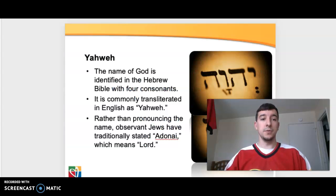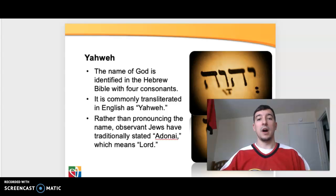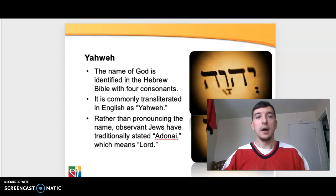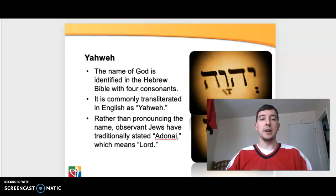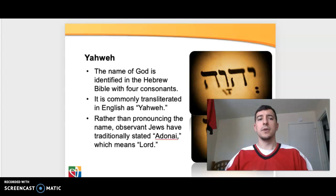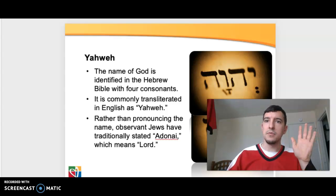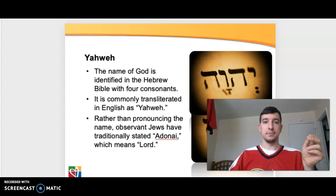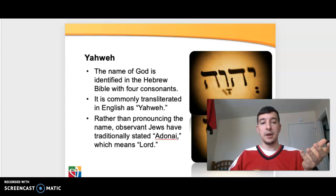For the Jews, Yahweh is the name of God, identified in Hebrew by the four consonants Y-H-W-H, depicted right above me. Commonly translated in English as Yahweh. Rather than pronouncing the name, observant Jews have traditionally stated Adonai, which means Lord. So when you hear the Hebrew word in Jewish prayers — Adonai or Yahweh — they're talking about God. They actually don't use the word God, G-O-D, kind of out of respect for His holy name. They also say Elohim and Eli.